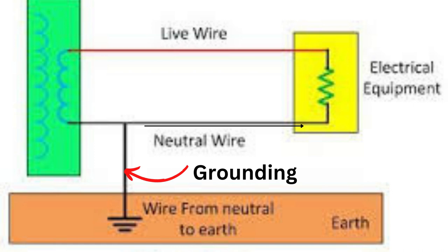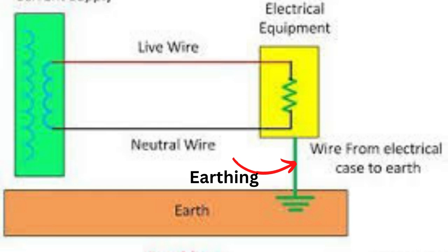Comparison between the grounding and the earth. One, grounding involves connecting the equipment's current-carrying components to the earth, while the equipment's non-current-carrying components are linked to the earth during earthing.